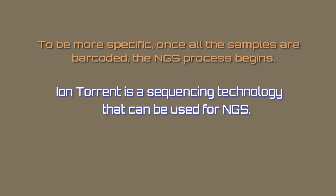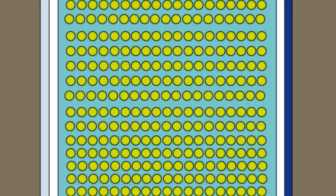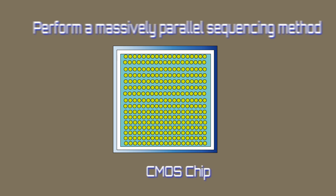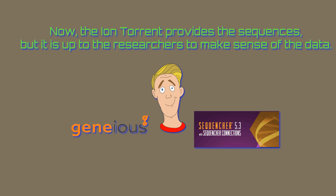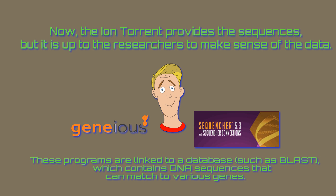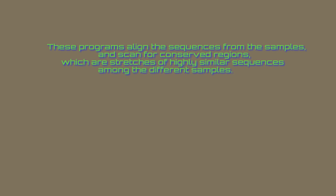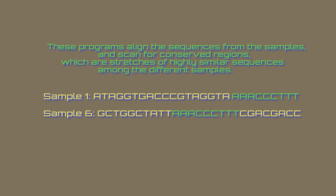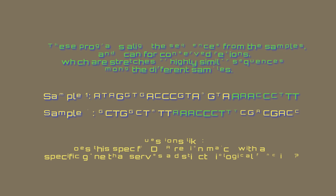Ion torrent is a sequencing technology that can be used for NGS. Semiconductor chips are essential to the ion torrent. A complementary metal oxide semiconductor, or CMOS chip, is used to store the information and perform a massively parallel sequencing method. The ion torrent provides the sequences, but it is up to the researchers to make sense of the data. Programs like Genius and Sequencer are used for this exact purpose. These programs are linked to a database such as BLAST, which contains DNA sequences that can match to various genes. These programs align the sequences from the samples and scan for conserved regions, which are stretches of highly similar sequences among the different samples. Questions like whether a specific DNA region matches a specific gene that serves a distinct biological function can be answered.